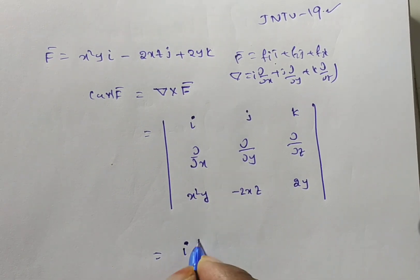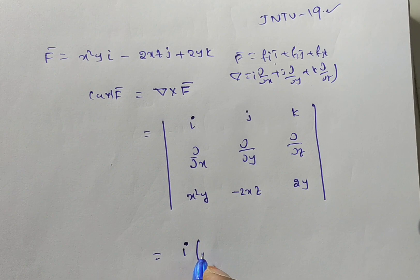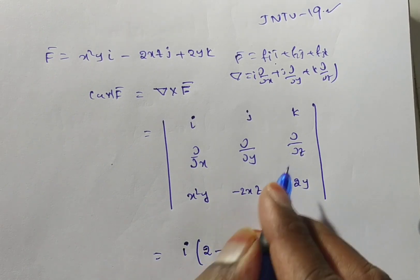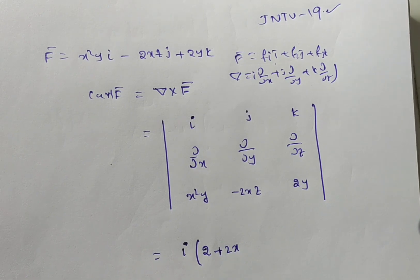Now we need to find out the determinant for this. This is equal to i into, with respect to y do it, then what you are getting now, 2 minus, with respect to z is minus 2x.